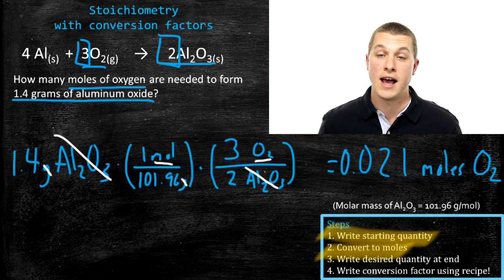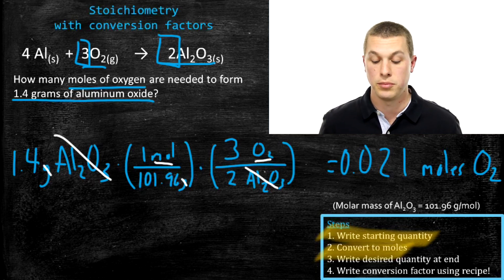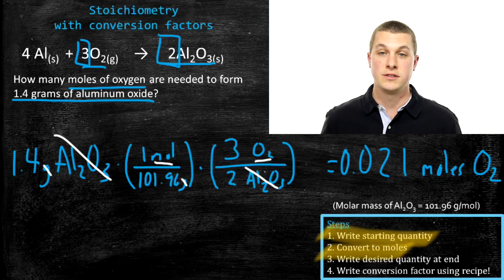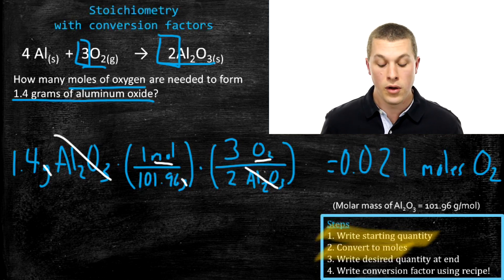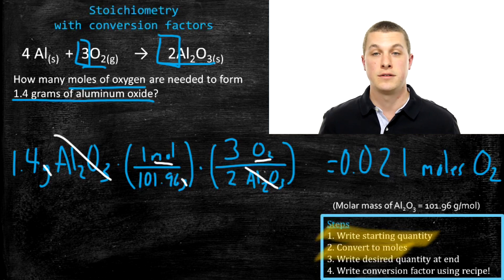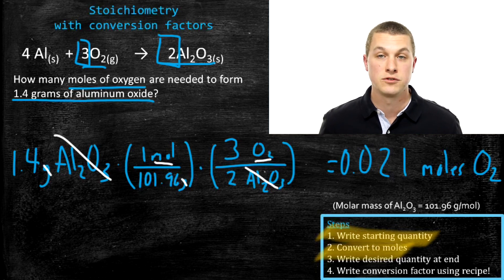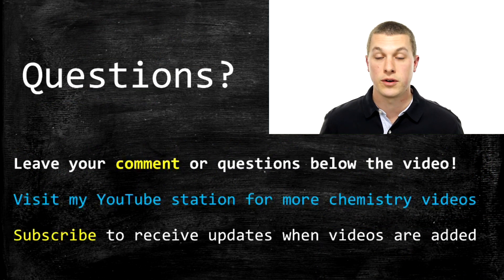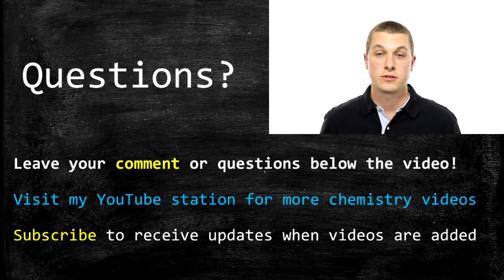If the question had asked for grams of oxygen, we could do that too — just multiply 0.021 moles of oxygen by the molar mass of oxygen. There are all sorts of different questions we can ask with stoichiometry, but hopefully you now have a good handle on how to write the correct conversion factors. Thanks for watching this episode of Real Chemistry — leave any questions below, and please subscribe for updates on future videos.